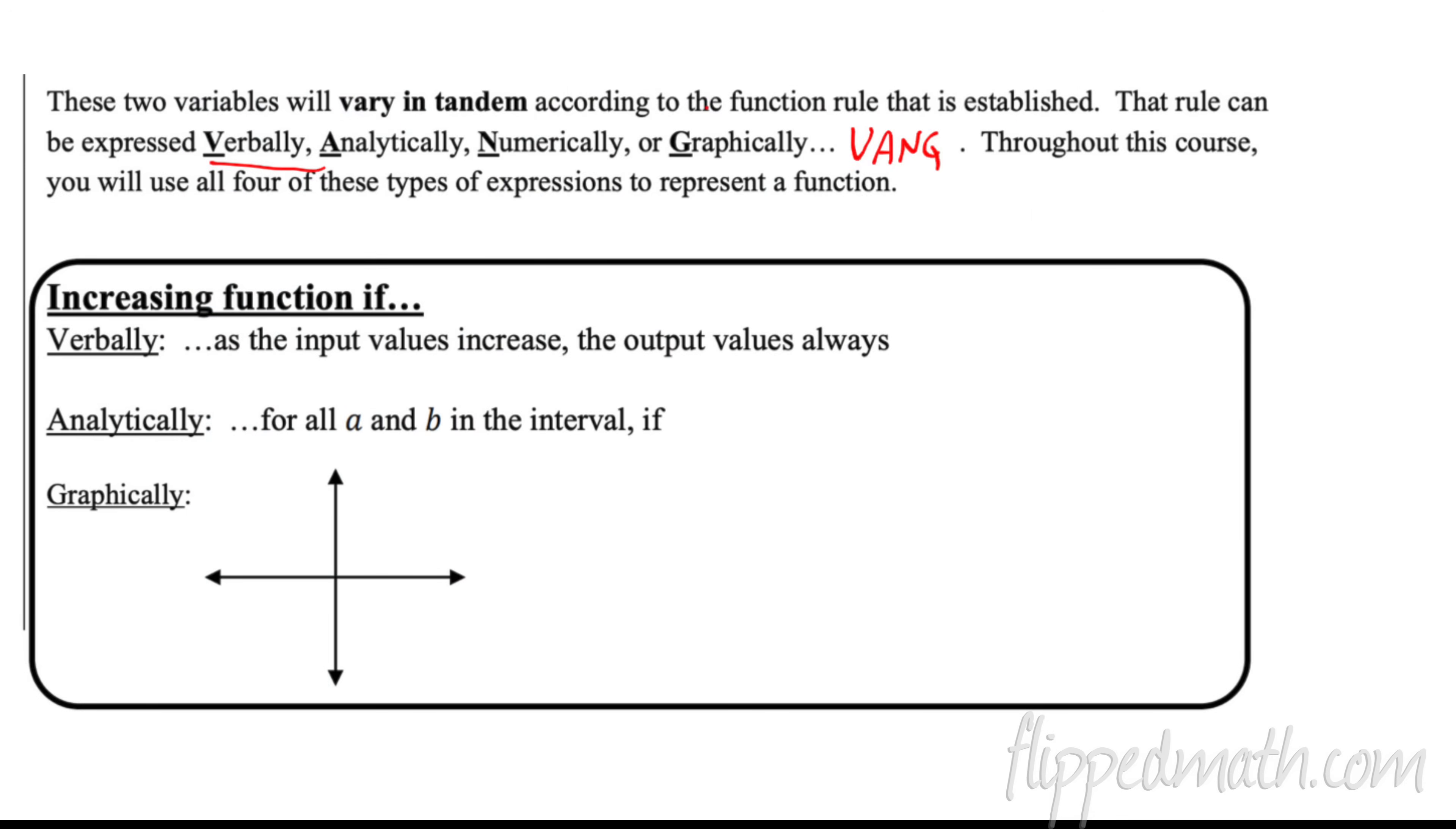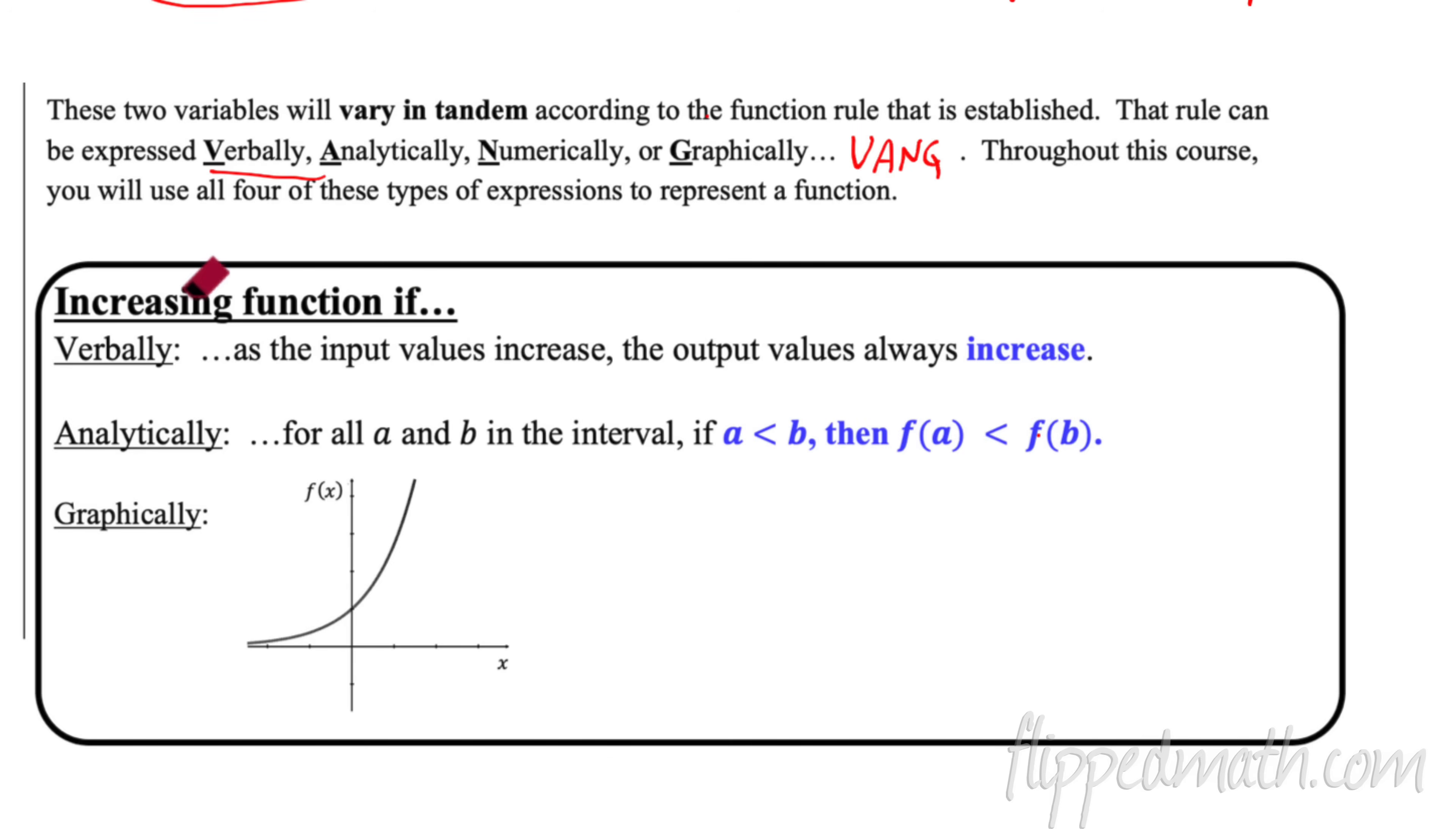All right, so now we're going to talk about whether a function is increasing or decreasing. So a function is increasing, we say verbally, as the input values increase, the output values always increase. So input values, remember, horizontal axis, as you go to the right, the output values, which is the vertical axis here, always increase. It always goes up. As you go to the right, it's always going up. That's what it means verbally to be an increasing function.